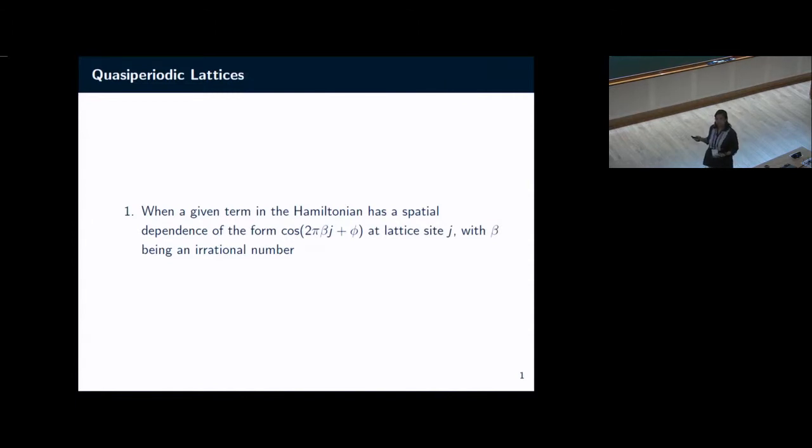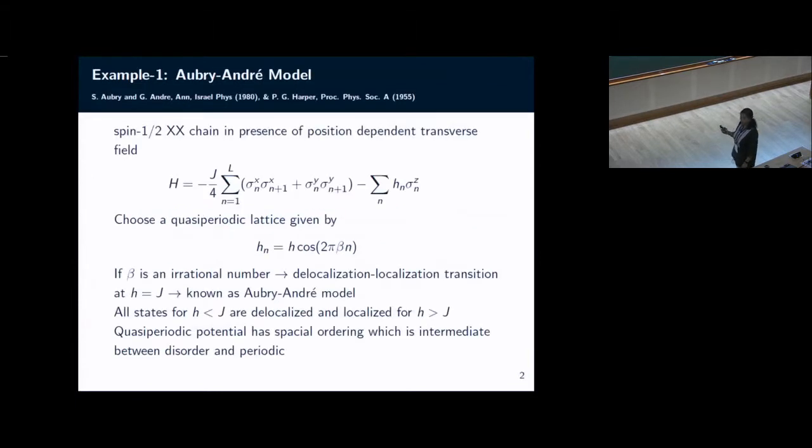The Hamiltonian shows some very peculiar behavior. What happens to the non-equilibrium dynamics of such a Hamiltonian when you drive it either suddenly or slowly? My focus here would be a sudden change to the Hamiltonian when you have a quasi-periodic term in.